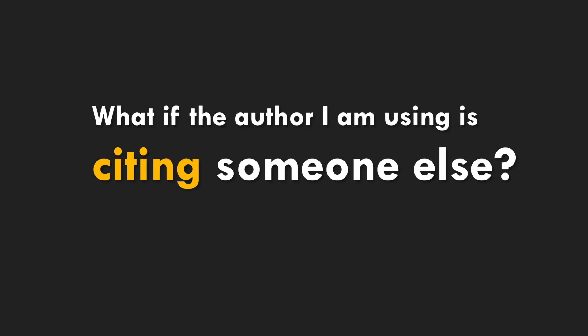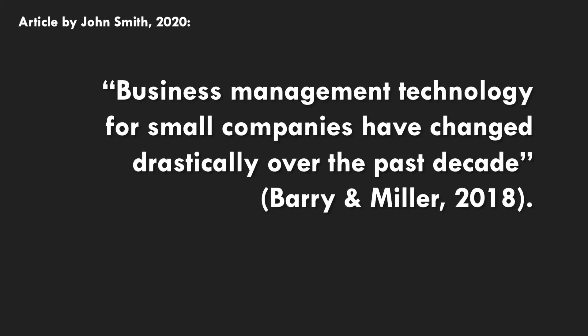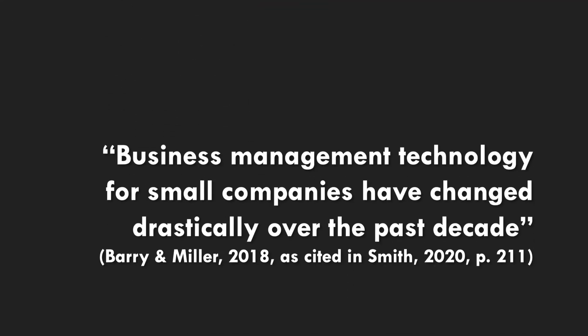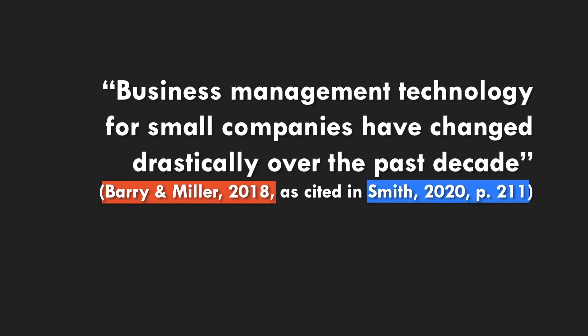What if the author you're using is citing someone else? This happens a lot and we call these secondary citations. In an article written by John Smith in 2020, you might read a quote originally from Barry and Miller. To cite this in your essay, you'd include the quote and then write: Barry and Miller (2018, as cited in Smith, 2020). You would only include the Smith reference in your reference list. It's actually easier to find the Barry and Miller article and read it yourself so you can refer to the original.